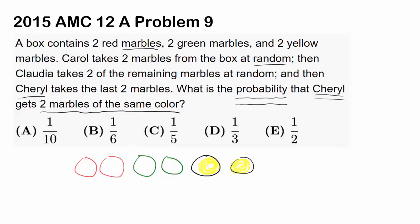So what's going to happen? Let's say Carol comes up and takes away the first 2, and Claudia comes up and takes away these 2. Then Cheryl is going to have 2 yellow which is good. You want her to take 2 of the same color.